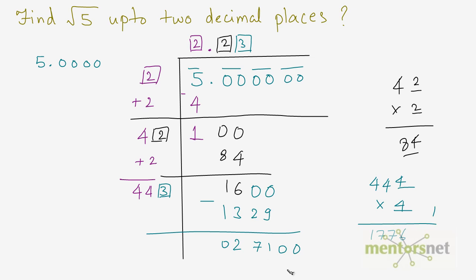But no need to calculate this further because the answer is asked up to two decimal places. So we have our answer up to two decimal places. So the square root of 5 is equal to 2.23. Of course there are more numbers after the decimal point. But this is an approximation.